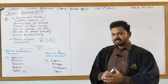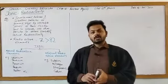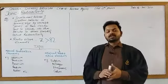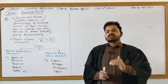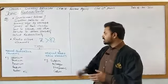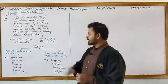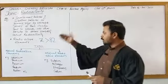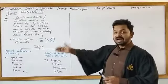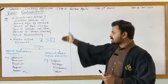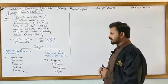Natural radioactive elements are those elements whose atomic numbers are greater than 82. Examples include uranium, thorium, polonium, radium, radon, etc.